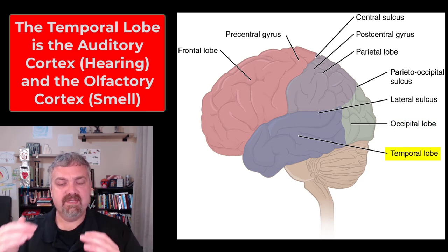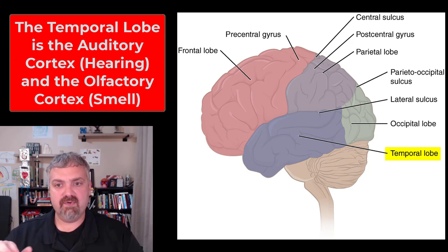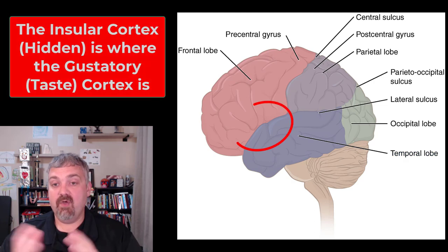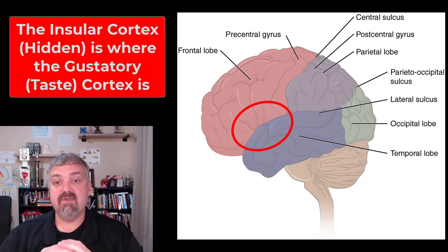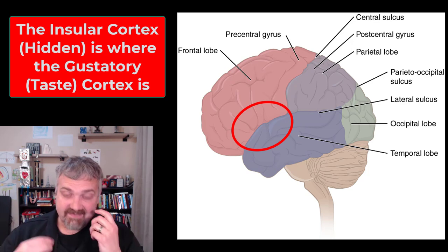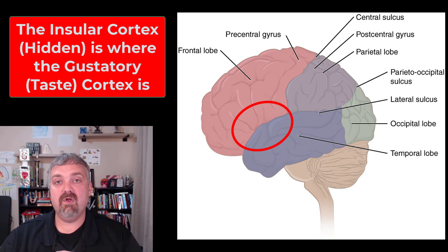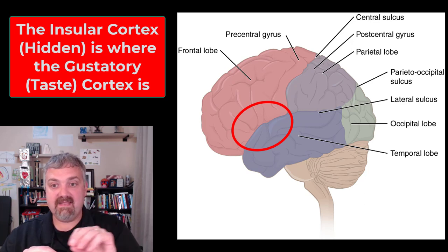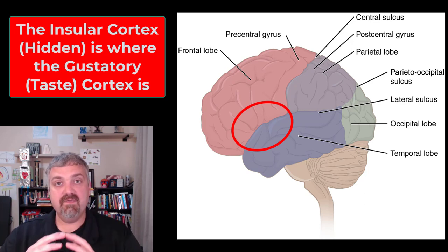So: motor is the frontal lobe, sensation is the parietal lobe, and vision is the occipital lobe. The sensory cortex in the parietal lobe handles your general senses, while some special senses have their own areas. The temporal lobe, separated from the frontal and parietal lobes by the lateral sulcus, has two functions: the auditory cortex where we hear, and the olfactory cortex where we smell. The only sense left is taste — the gustatory cortex — which is located in an area called the insula, or insular cortex.